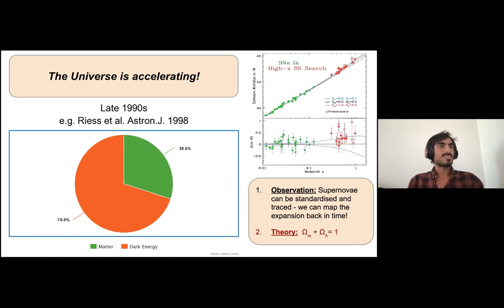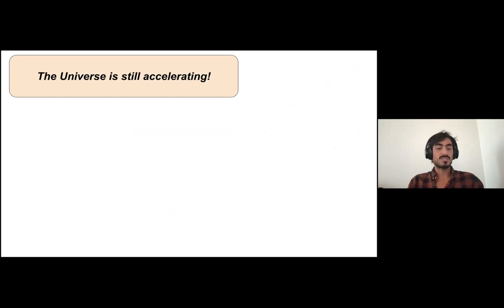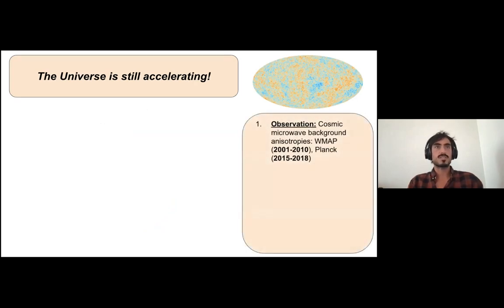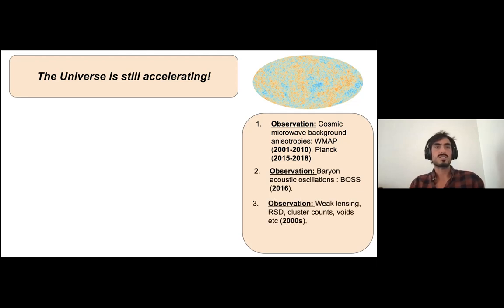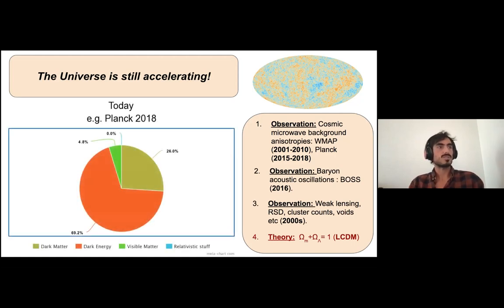The status quo has been maintained for the past 20 years and improved with more precise measurements. For example, CMB measurements from the Planck satellite in 2018, and precursors like WMAP, also show a universe with about 30% matter and 70% dark energy causing late-time acceleration. Also confirmed by many other observations — there is a plethora of empirical evidence supporting this cosmological model. That has become the standard model of cosmology, fitting all this data very well, except for some mild tension.